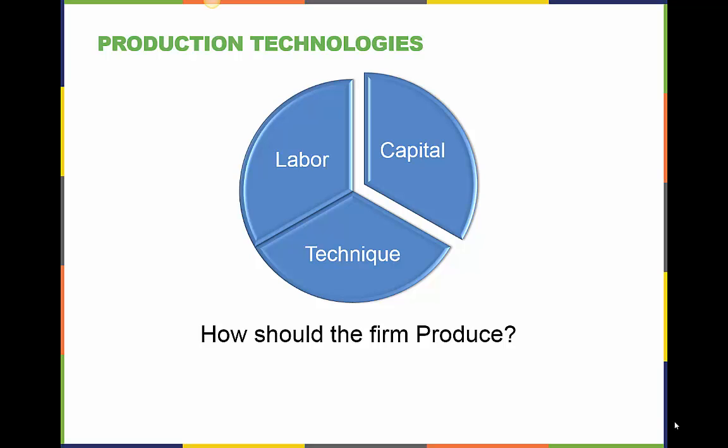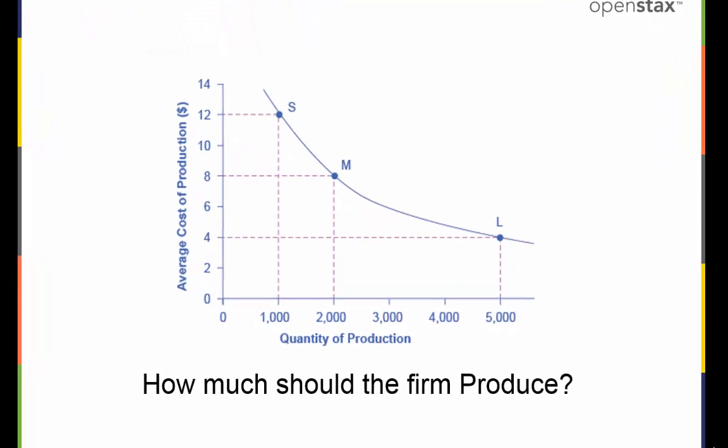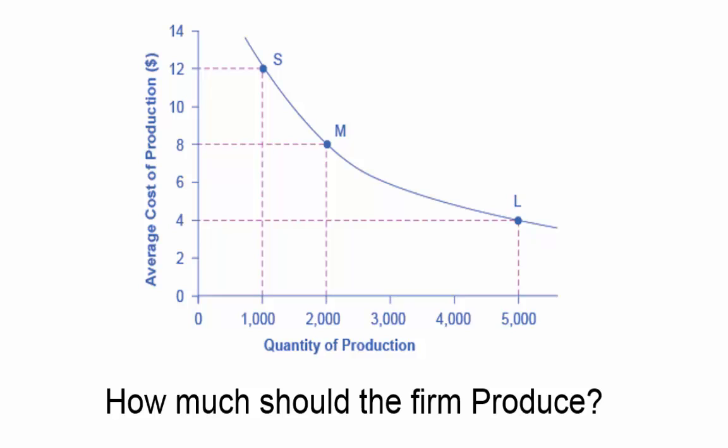The best process in the long run is the lowest cost method. Economies of scale are present when costs per unit drop as output increases. Here is a graph that shows this occurring in a market.